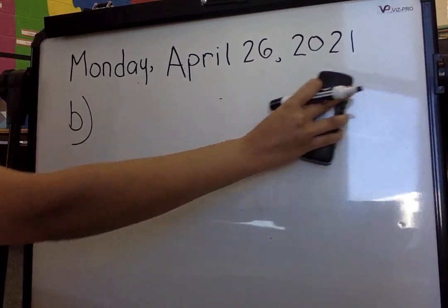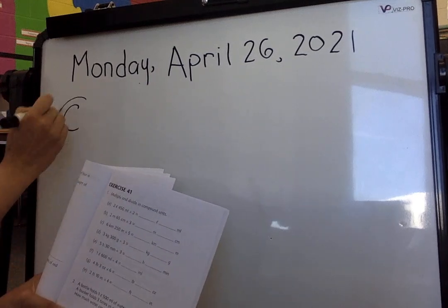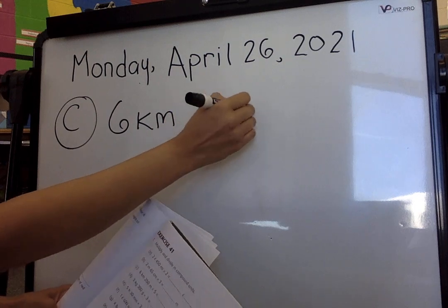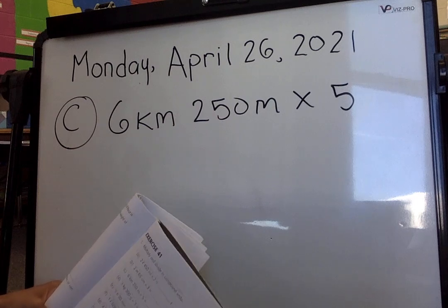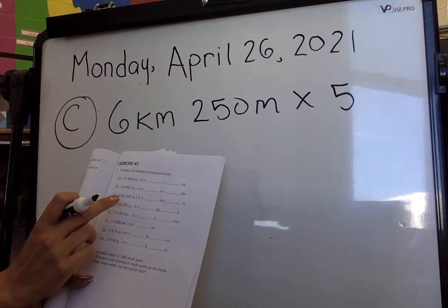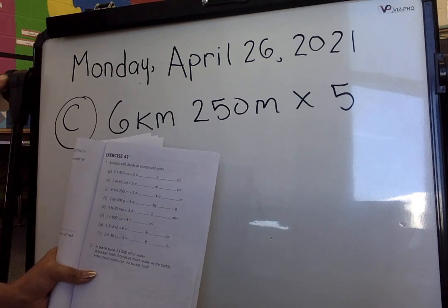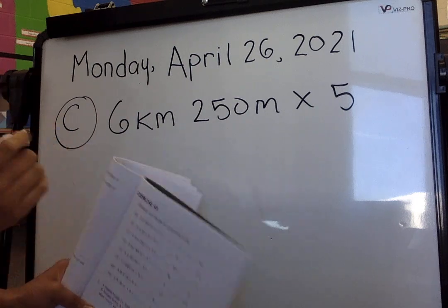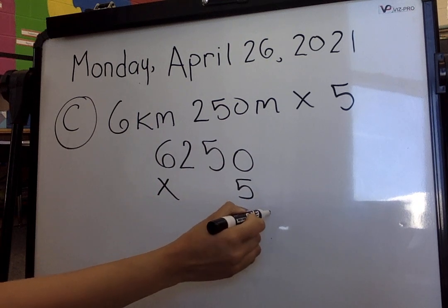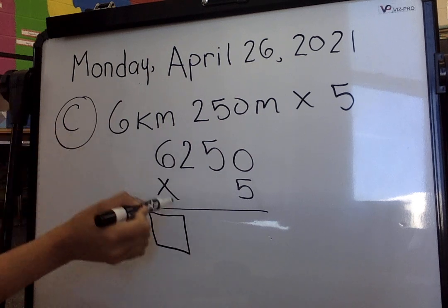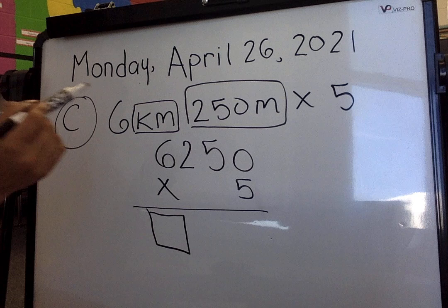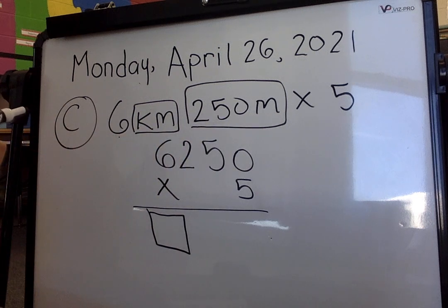Let's look at C. Question C is 6 kilometers and 250 meters, and we need to multiply by 5. 1 kilometer equals 1,000 meters, so 6 kilometers equals 6,000 meters. That means we calculate 6,050 times 5. The number showing up in the thousands column will be our kilometers, and the hundreds number will be our meters — because meters come in hundreds and kilometers are in thousands.